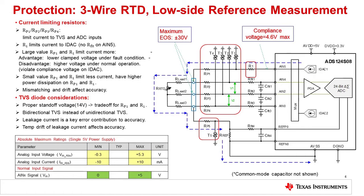Let's talk about the tradeoffs in resistor selection. The advantage of using a large value of RP1 is that it will limit the current into T1 significantly, resulting in a lower clamped voltage at AN5. The disadvantage of high RP1 resistances is that under normal operating conditions, the voltage drop from the IDAC current will be too high and out of the specified compliance range for the ADC. The compliance voltage for the IDAC is 4.6 volts when the ADC supply is 5 volts and the current source is set to 750 microamps. This compliance level will be used in the selection of RP1 and R1. The resistor R1 is selected to limit the input current to the ADC below the absolute maximum rating of plus or minus 10 milliamps.